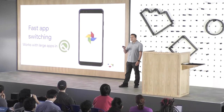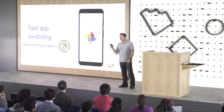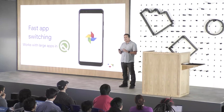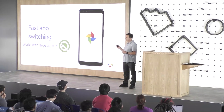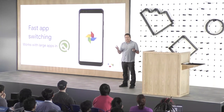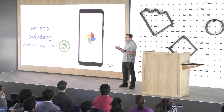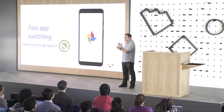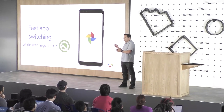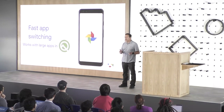A new improvement in Android Q is very active compaction of background apps. So if you have a very large app — like your game, for example — users can put your game into the background, and it'll still be resident and running when it comes back.